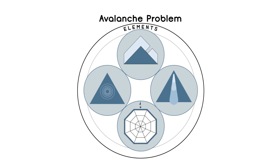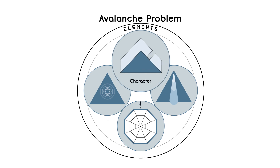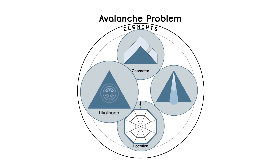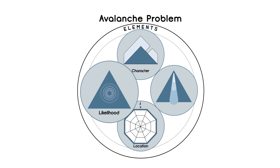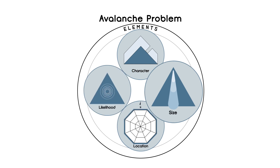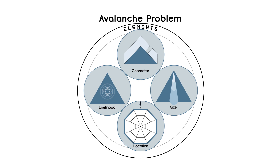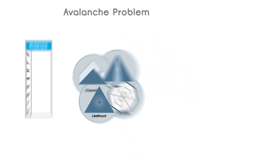Avalanche problems are defined using four elements: the kind of avalanche, where that avalanche exists in the terrain, how likely you are to trigger it, and how big it will be. These ideas are communicated by forecasters using icons and text.